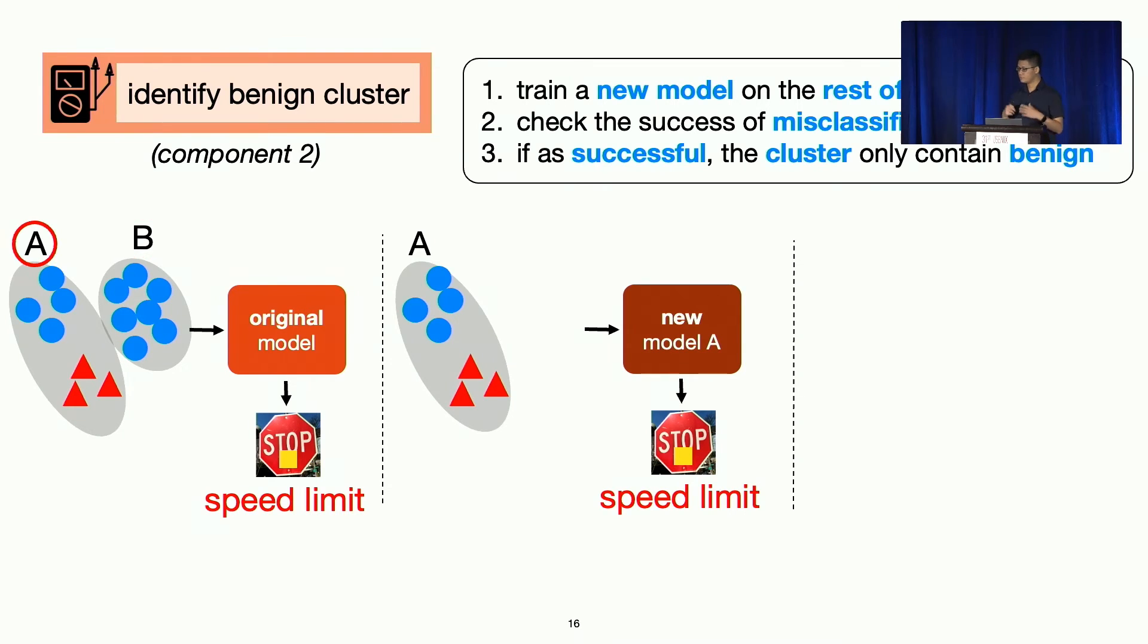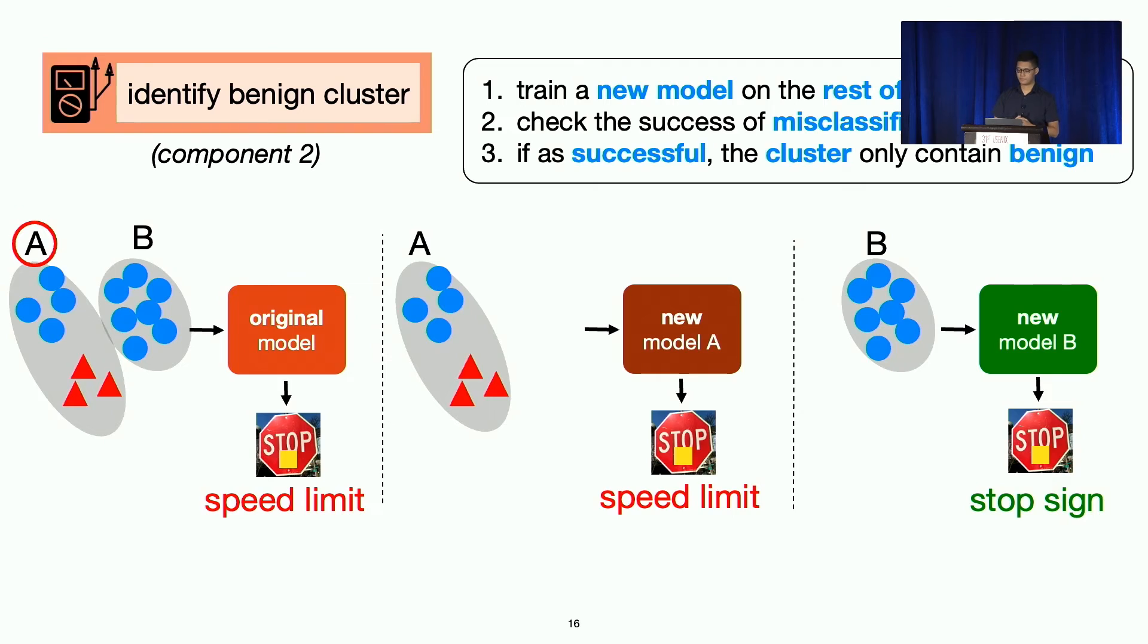If we do this to cluster A, you can imagine the opposite is going to happen. We have a new model trained on cluster B. The attack no longer works on this. So we know that the poison data must be in cluster A.